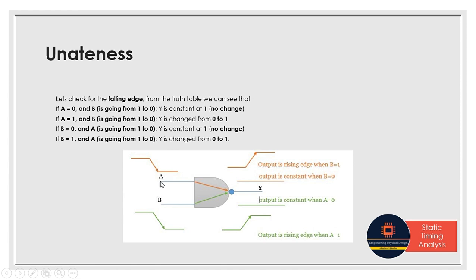For the NAND gate falling edge: when one input is zero and the other goes from one to zero (falling), the output is one — constant. When one input is set as one and the other input falls from one to zero, the output goes from zero to one — the opposite transition. This confirms negative unateness for the NAND gate.